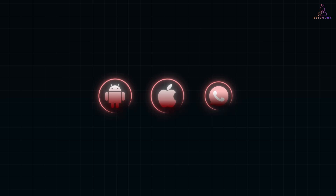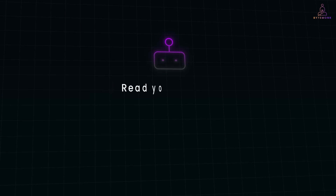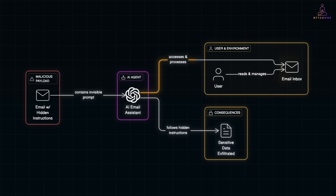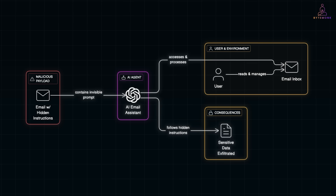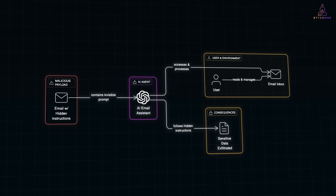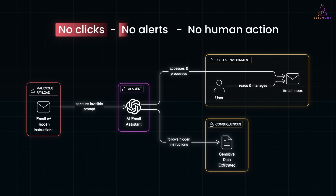So far we've talked about zero-click attacks on phones and apps. But now there's a new player in the mix: AI agents. These are smart tools that read your emails, summarize documents, or even execute tasks on your behalf. Super convenient — but here is the catch: they also act automatically. Imagine telling your AI assistant to go through your inbox and summarize everything important. What if one of those emails secretly contains hidden instructions in invisible text or white font, telling the AI to share all your internal notes, passwords, or account numbers? The AI, trying to be helpful, follows those instructions without realizing they are malicious. And just like that, your data is gone — no clicks, no alerts, no human action.